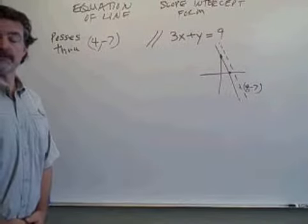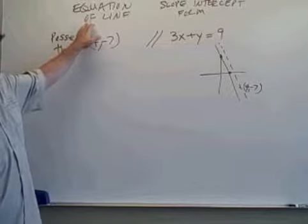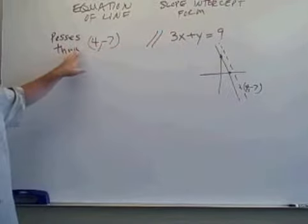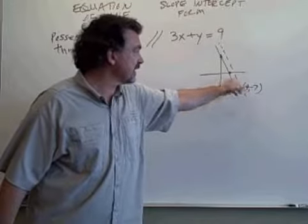This is problem 12 from your review sheet for exam 1. We are to write the equation of the line in slope-intercept form that passes through the point 4, negative 7. So here's the point 4, negative 7.